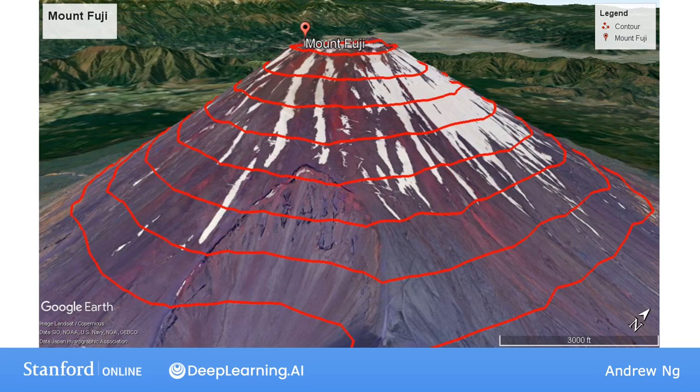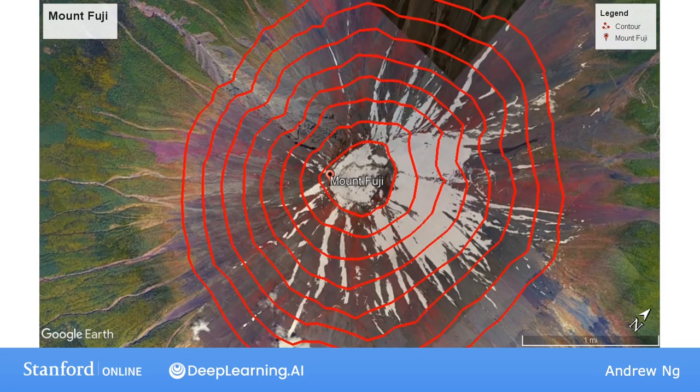I still remember my family visiting Mount Fuji when I was a teenager. It's a beautiful sight. And if you fly directly above the mountain, that's what this contour map looks like. It shows all the points that are at the same height for different heights.